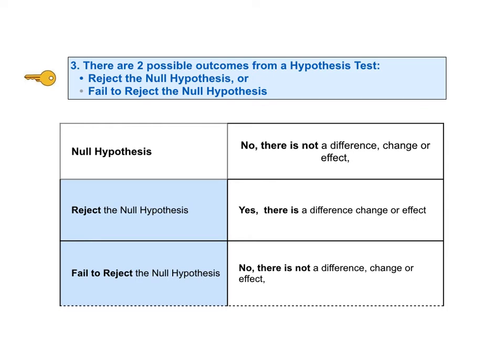This language can be confusing for many people. So there are two separate articles in the book and two separate videos devoted to these two conclusions. But it all boils down to this: reject means yes, there is a statistically significant difference, change, or effect. Failed to reject means the opposite — no, there is not a statistically significant difference, change, or effect. Note that the null hypothesis and failed to reject the null hypothesis say the same thing.